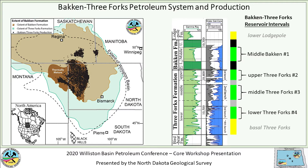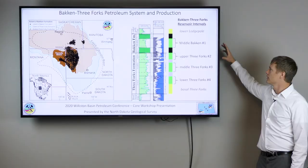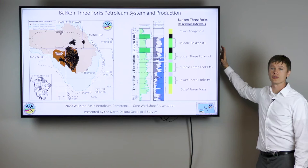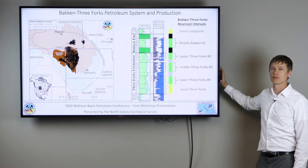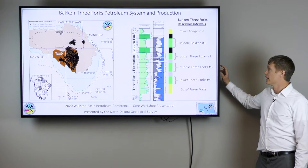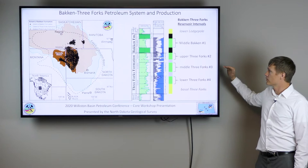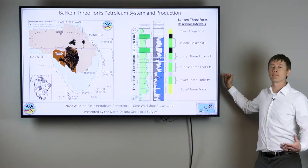These secondary units have seen on the order of hundreds of horizontal wells drilled and completed primarily in western North Dakota. There's less published literature available on the middle and lower Three Forks, in part because these units started producing later and are not as productive to date. Today's presentation focuses on the middle Three Forks, trying to piece together the geology and apply it to oil and gas production.